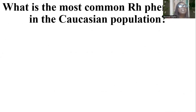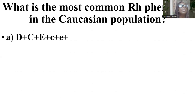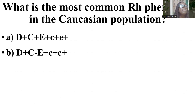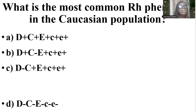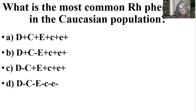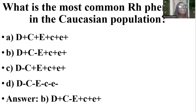What is the most common RH phenotype in the Caucasian population? We have options A, B, C, and D. And the answer is D.